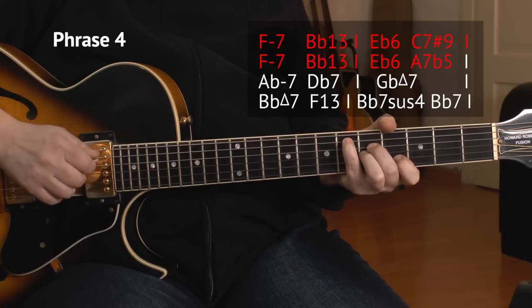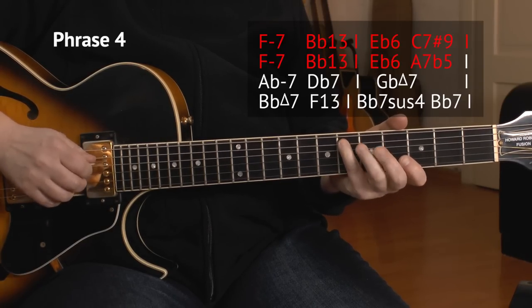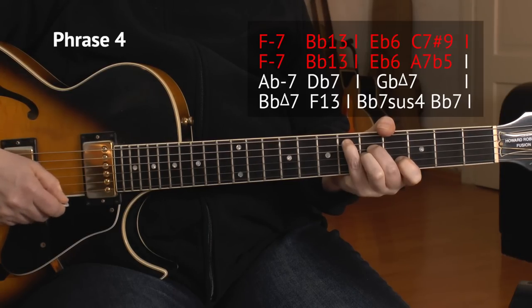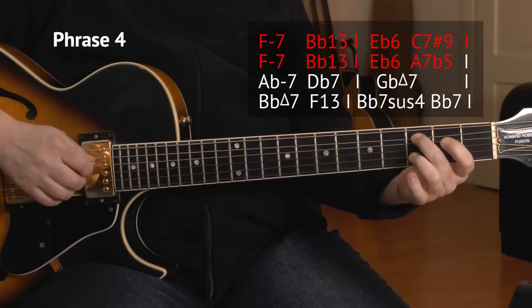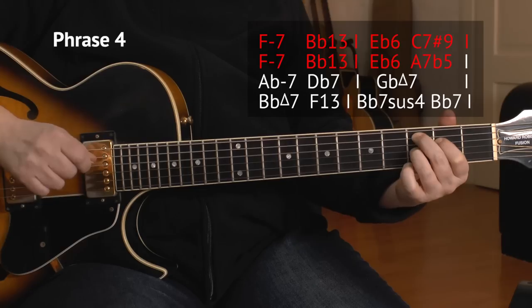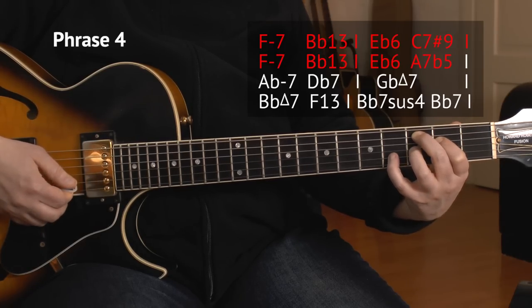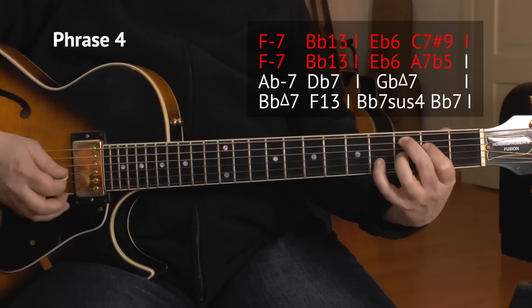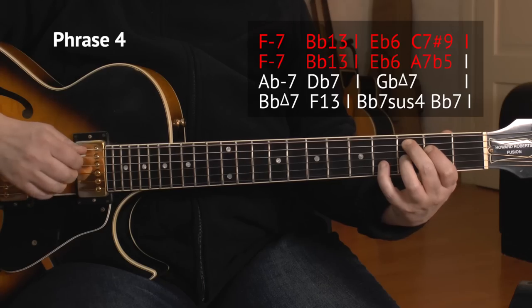E flat 6, we had it before, E flat, 6, 5, 5, 4. Then the B string one more time, C7, 3, 2, 3. And the sharp 9, that's the 4th of the B string, 3 times, just like in the pickup to the B section, right?